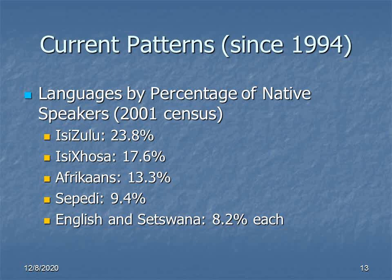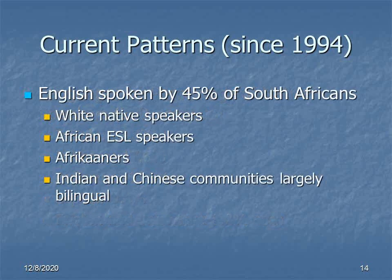This is a very different dynamic than we saw, for example, in Australia or in any of the other colonial environments we've explored. Just looking at these numbers, you might actually be tempted to think that English is not all that important in the overall context of South African culture. But you would be mistaken. When we take into account speakers whose first language is not English, we find that English is actually spoken by 45% of South Africans. This includes white native speakers, but it also includes African ESL speakers, many Afrikaners, and the ethnic Indian and Chinese communities as well, both of which are generally bilingual — speaking one of the native languages of the culture from which they're descended, and English.